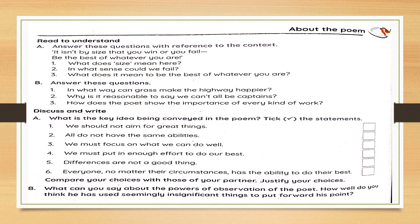Now, come to discuss and write question B, one we have already discussed. What can you say about the powers of observation of the poet? How well do you think he has used seemingly insignificant things to put forward his point? Now, this is something for you to ponder upon. As you see, the poet has used so many imageries, so many contrasts. So, can you say the poet has a good power of observation? Yes, we most definitely can. How do you think he is proving his point? By bringing two very unrelated things together. He is contrasting two very unrelated things together. So, how is he putting forward his point?